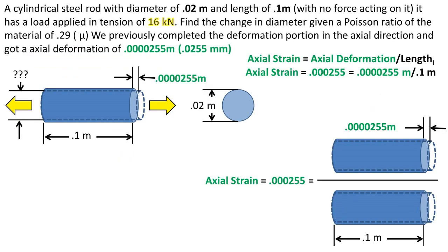Going back to our problem, if we take our axial deformation over the length of the rod of 0.1 meters, we get an axial strain of 0.000255. Note, this is unitless because we are dividing meters by meters.